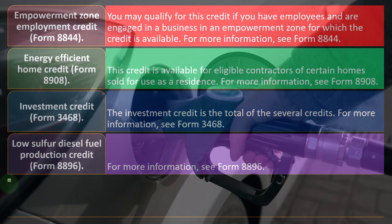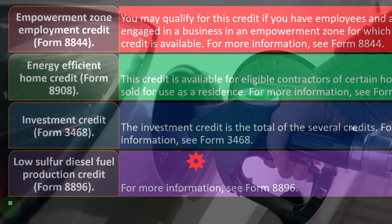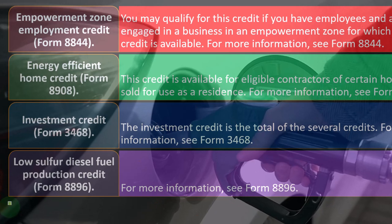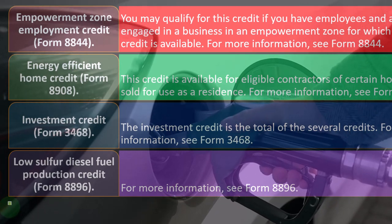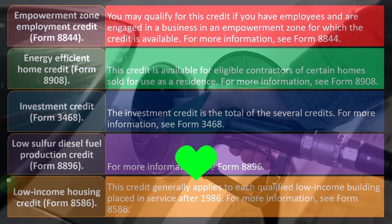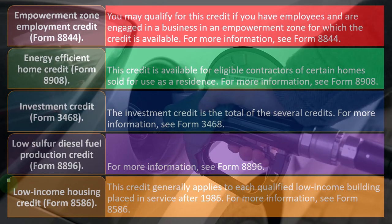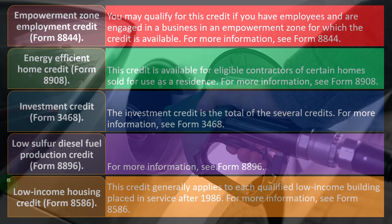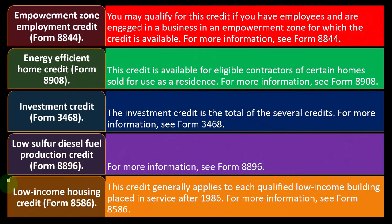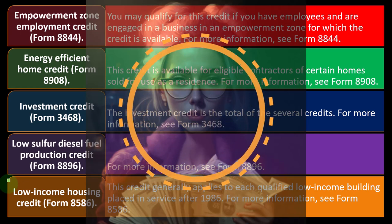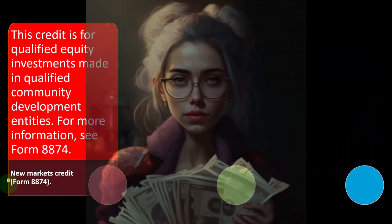The Low Sulfur Diesel Fuel Production Credit is on Form 8896. The Low Income Housing Credit is on Form 8586. This credit generally applies to each qualified low-income building placed in service after 1986. If you're in that industry, you can check out Form 8586 for more information.